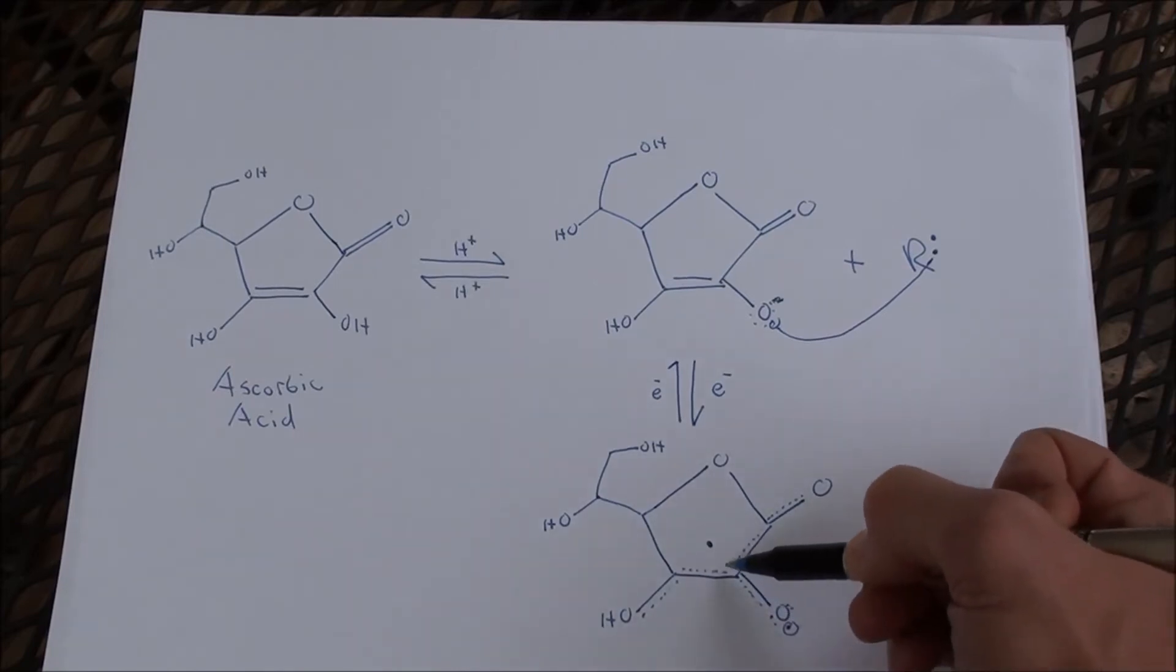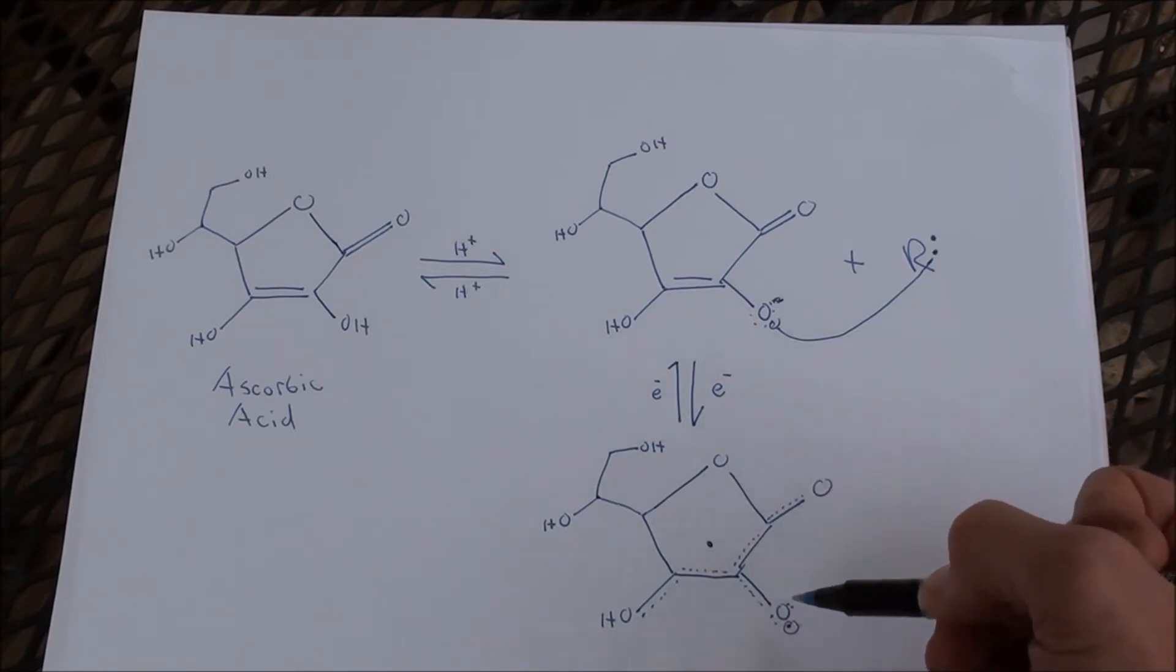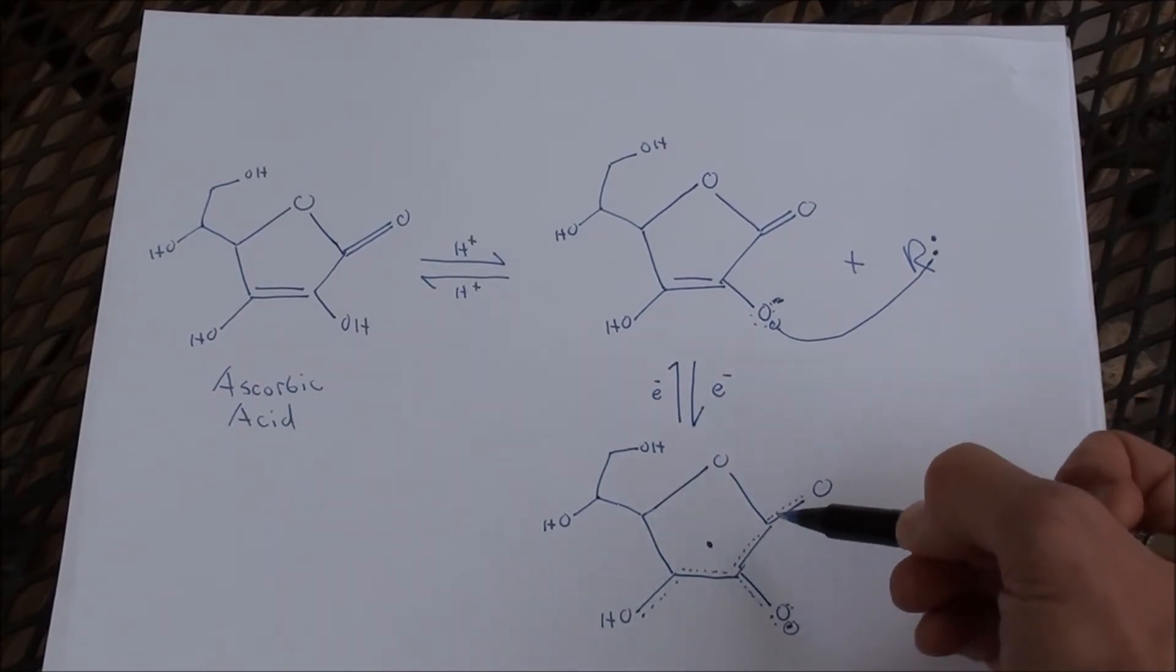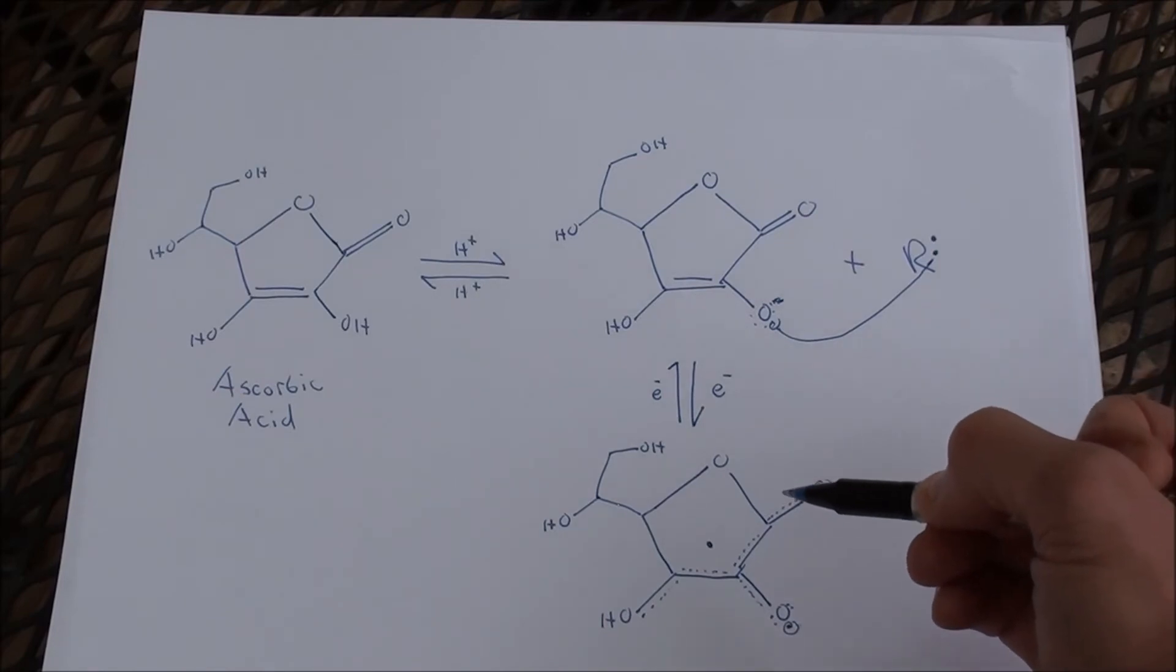Effectively making double bonds here, double bonds there, double bond there, double bond here, double bond here. And so it takes this electron, spreads it throughout the molecule, creates a far lower energy state.